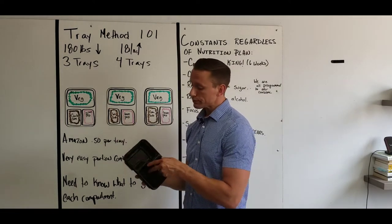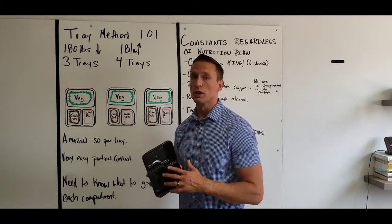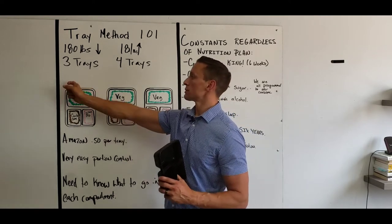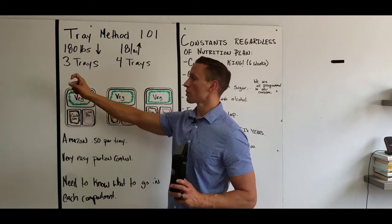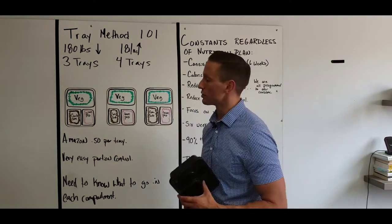Number one, in the large portion of the tray, vegetables, any sort of vegetables, preference towards green leafy vegetables. So we could go spinach. We could go broccoli. We could go green beans. We could go kale. We could go even a lettuce if we wanted to.